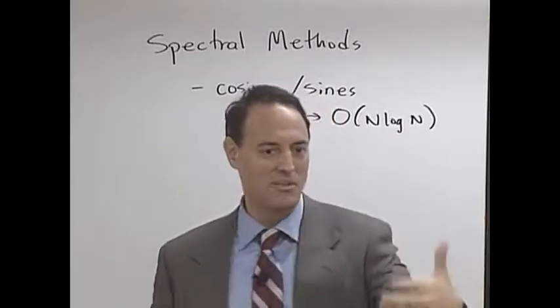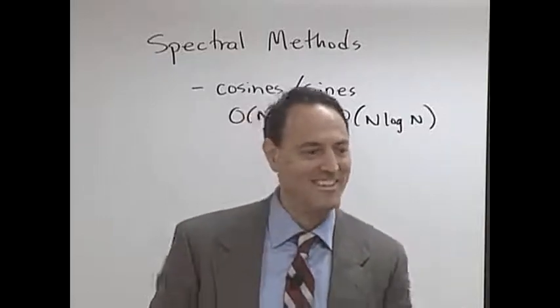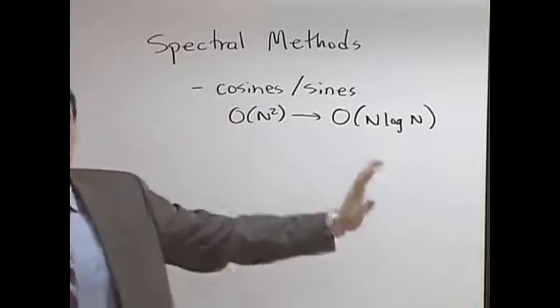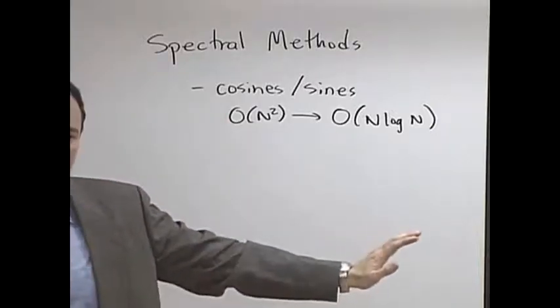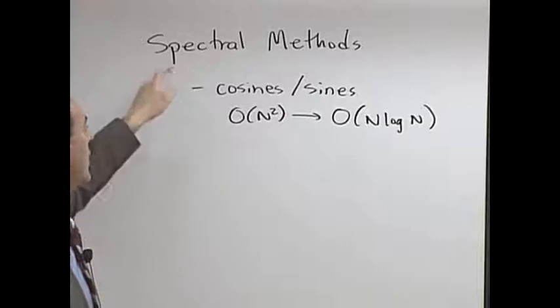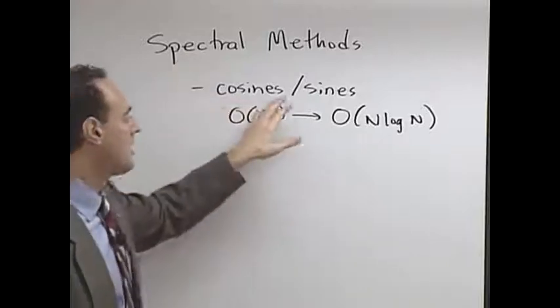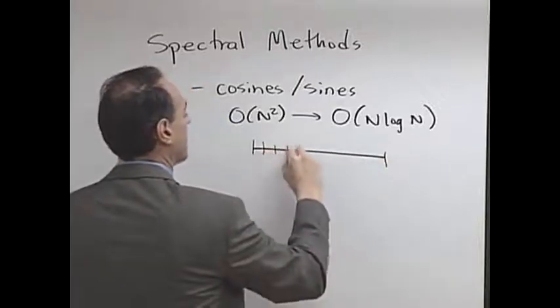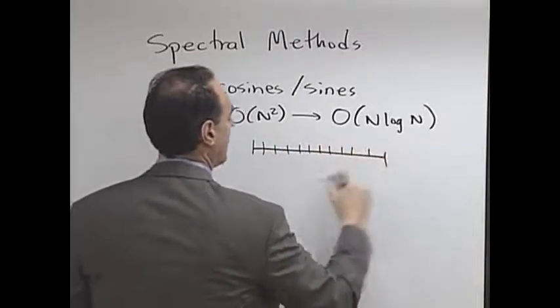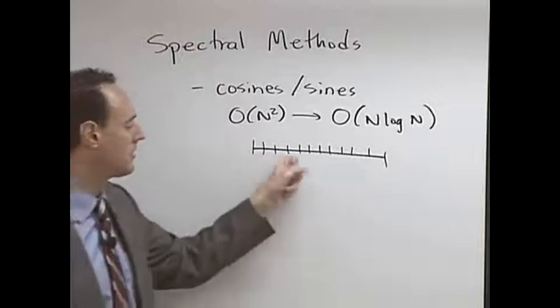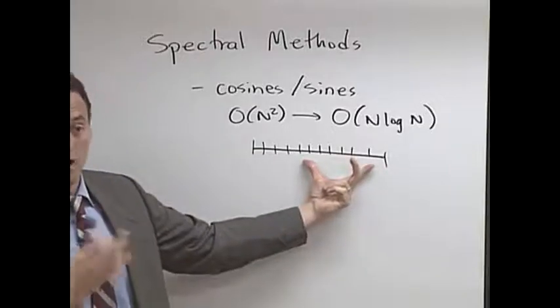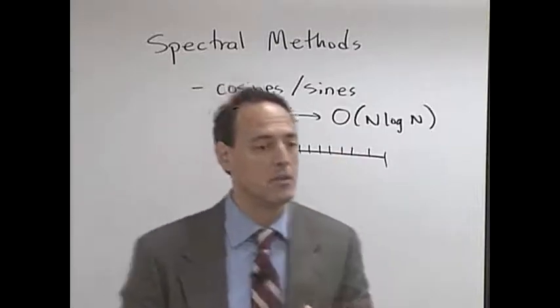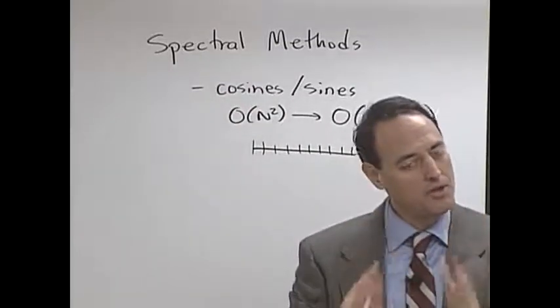Now, cosines and sines aren't the only thing we could represent. Remember the idea of spectral is that there's a philosophical shift. Before, when we were doing finite difference, we chop up the domain to a certain number of points and evaluate whatever our solution is on these points.